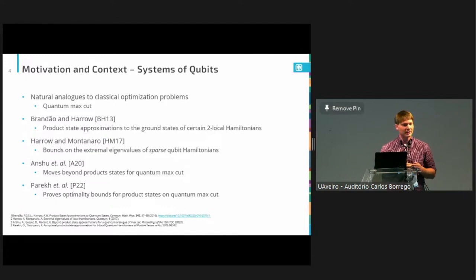The problem that people focus on a lot is quantum max cut, which generalizes max cut, which is a very classic graph problem. Back in 2013, Brandão and Harrow opened up this field by demonstrating that you could get some good product state approximations to the ground states of certain two local qubit Hamiltonians. A few years later, Harrow returned to the problem with Montanaro and gave some really nice bounds on the extremal eigenvalues of sparse local qubit Hamiltonians. You should think of our work as improving upon the Harrow and Montanaro result, and I'll do a little bit of comparing and contrasting later.